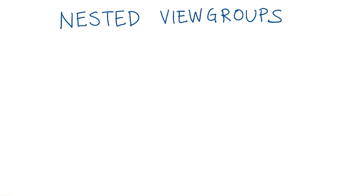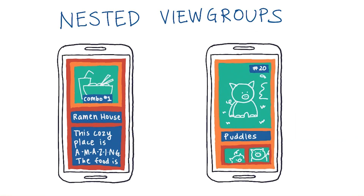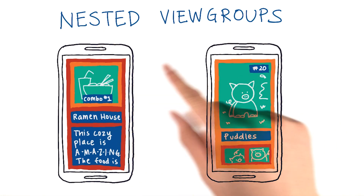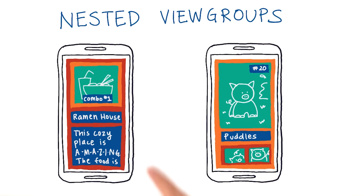When discussing how to position views in the last quiz, you may have mentioned using a relative layout. I want to introduce you to another way that you can build a layout for our app that would be more ideal, using nested view groups. Nested view groups means putting view groups inside other view groups. That way you can build more interesting and complex layouts like these.